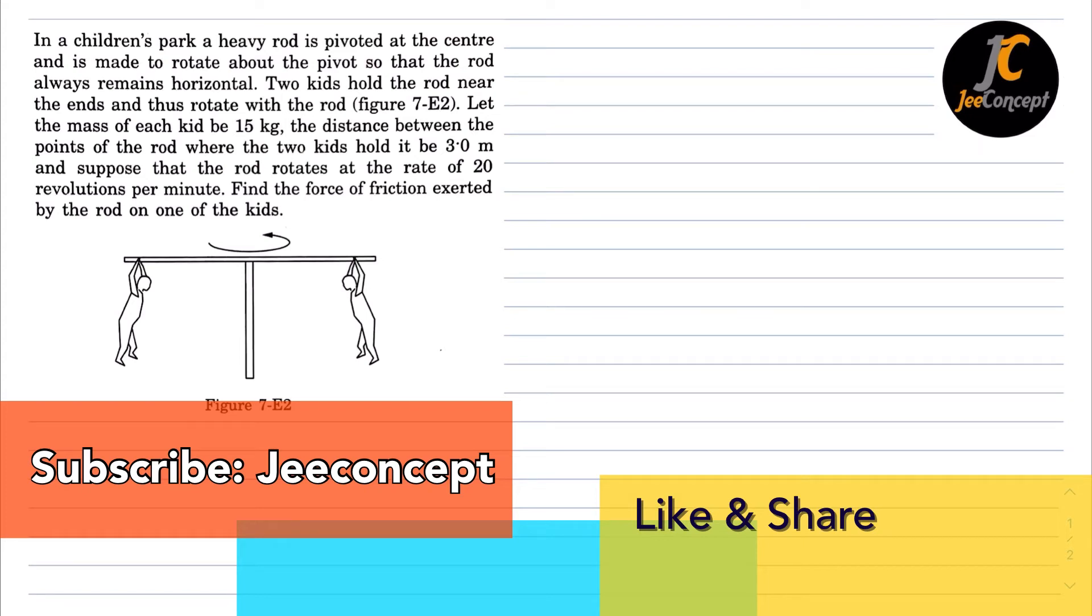Hello everyone, in this video we will try to find the solution of a question which says in a children's park a heavy rod is pivoted at the center and is made to rotate about the pivot so that the rod always remains horizontal.